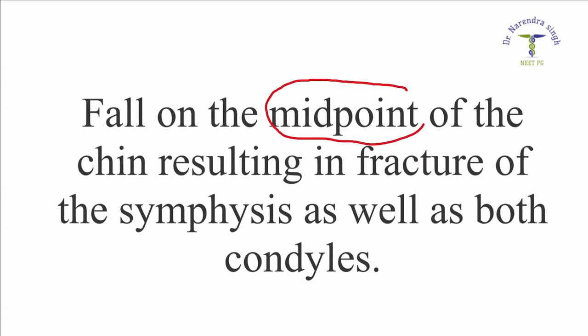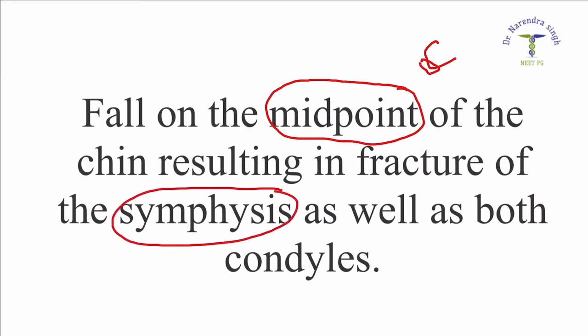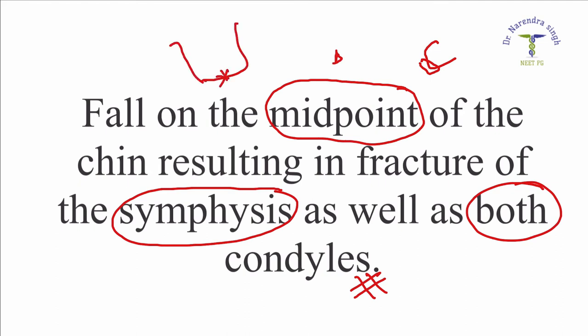The mechanism is a fall on the midpoint of the chin — falling flat on the chin area — resulting in fractures at three sites: number one is the symphysis, as well as both the condyles. The symphysial fracture is on the midline, and both condyles are also fractured. This pattern is known as the Guardsman fracture.